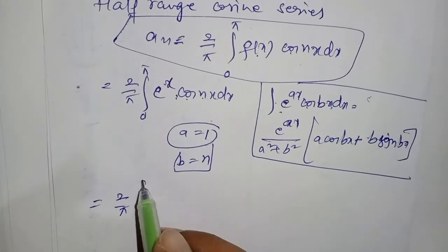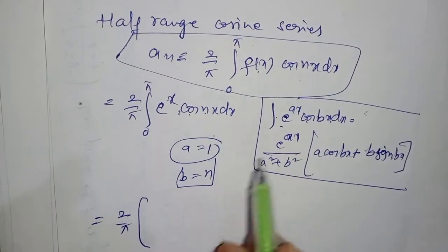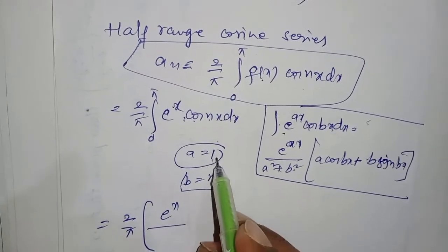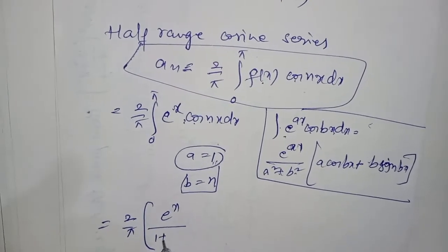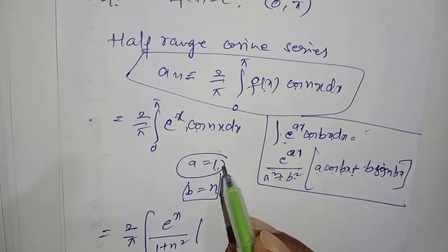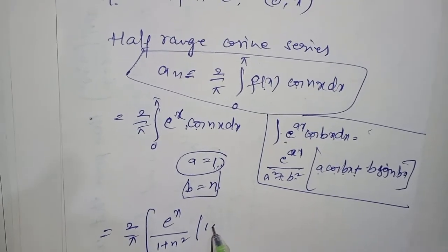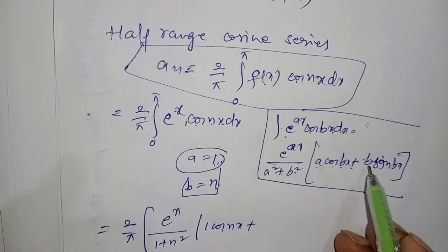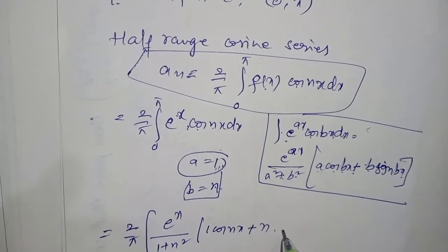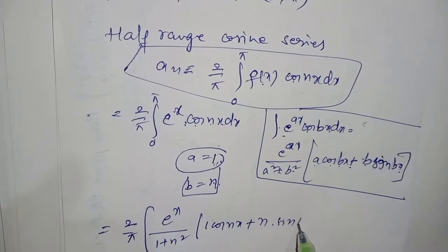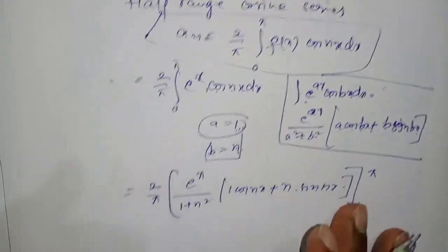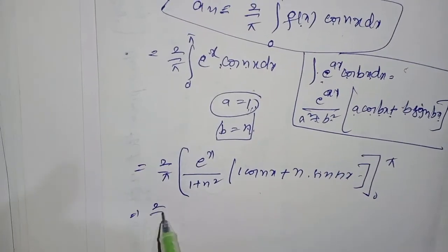Substituting a = 1 and b = n into the formula, we get (2/π) × [eˣ / (1 + n²) × (1·cos(nx) + n·sin(nx))] evaluated from 0 to π.